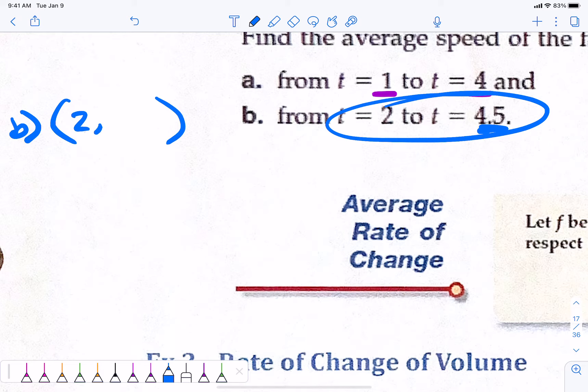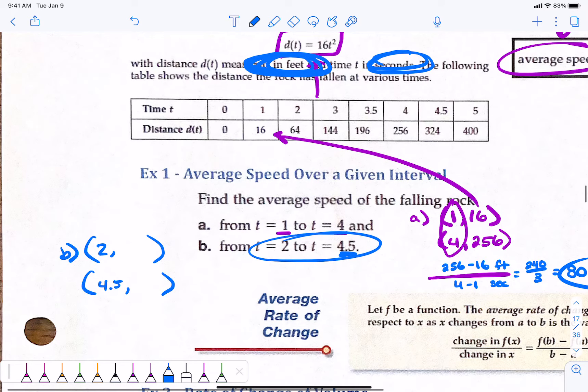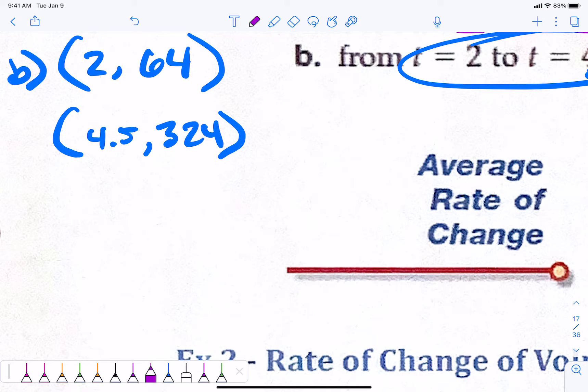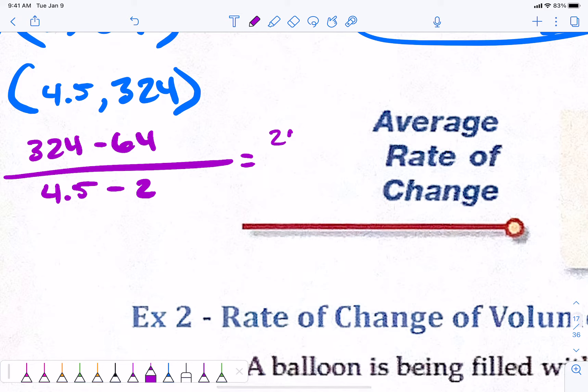So, we're going to figure this one out. Part B, 2 comma something, and we have 4.5 comma something. 2 is at 64 and 4.5 is at 324. Do you see where I'm getting these numbers from? From the table. If you don't have this table, you plug the numbers into the equation that they give you. Let's subtract and let's do our slope. 324 minus 64 is 260 over 2.5.